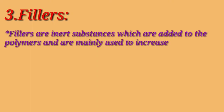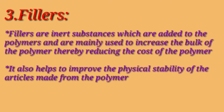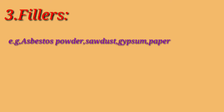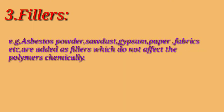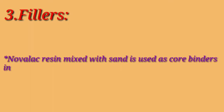Next is fillers. Fillers are inert substances added to polymers, mainly used to increase the bulk of the polymer, thereby reducing cost. They also help to improve the physical stability of articles made from the polymer. Examples include asbestos powder, sawdust, gypsum, paper, fabrics, etc., which are added as fillers and do not affect the polymer chemically. For example, bakelite mixed with asbestos and sawdust is used to mold electrical items and telephones. Novolac resin mixed with scent is used as a core binder in foundries.